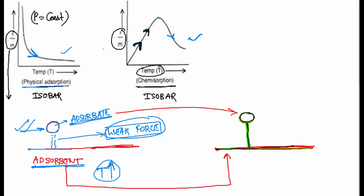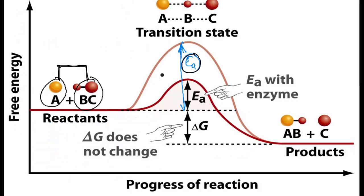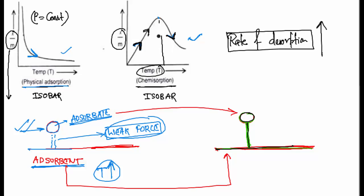But after a certain temperature, the rate of desorption will increase again, and if desorption increases, of course the amount of adsorbate per unit amount of adsorbent will decrease. So the reason is simple: initially the increase in temperature facilitates bond formation by providing energy to cross the activation barrier, but after a certain temperature the rate of desorption increases, and so the amount of adsorbate decreases.